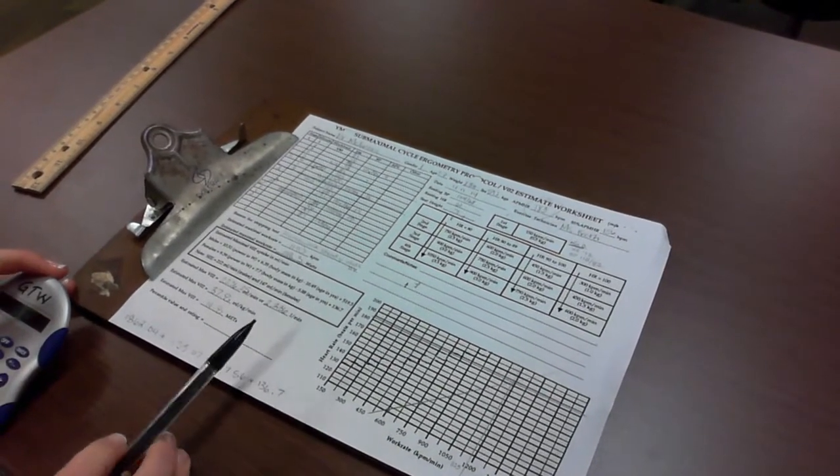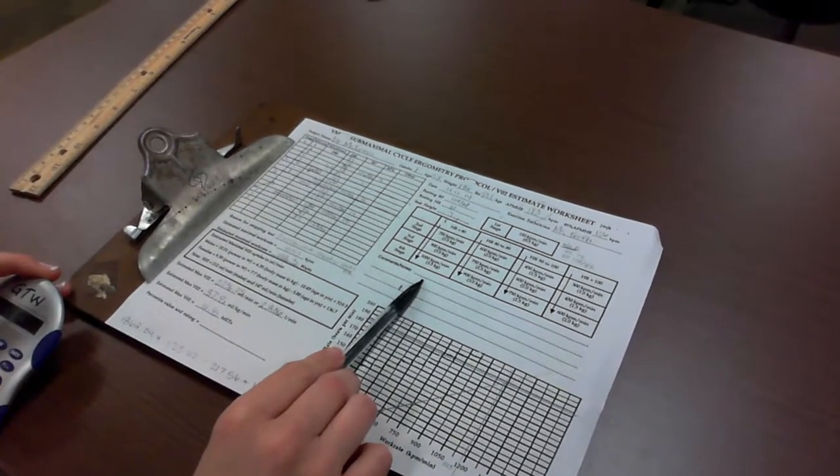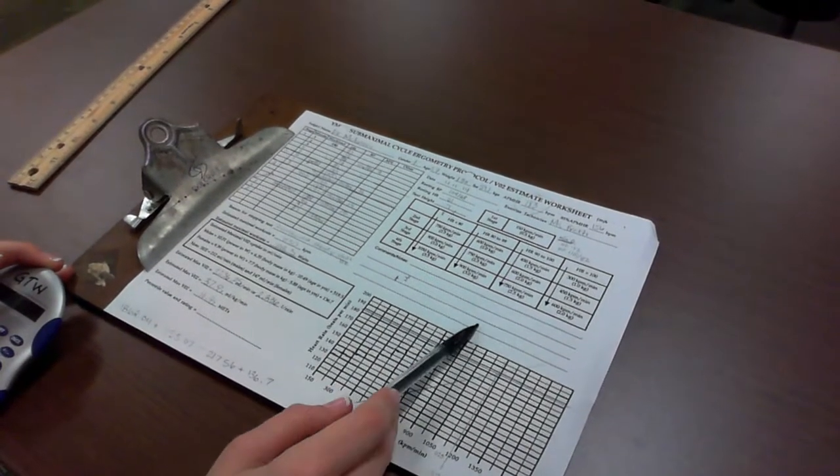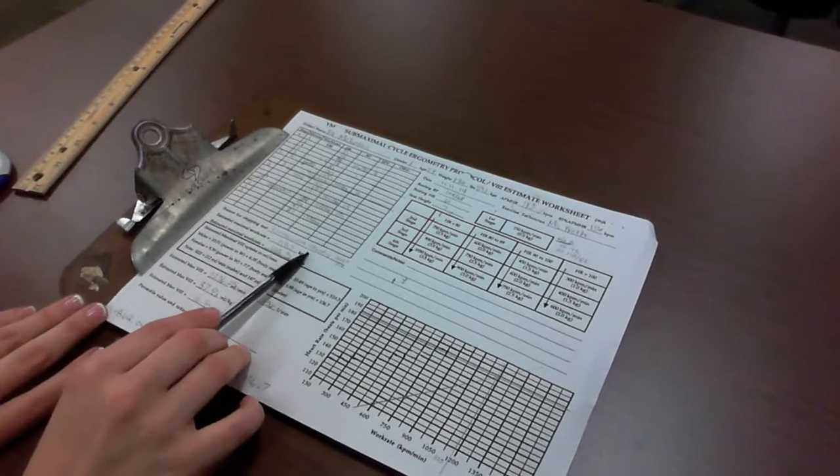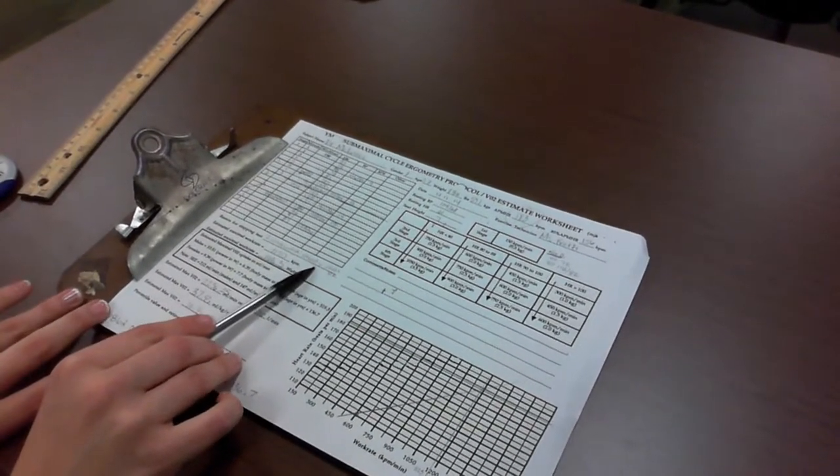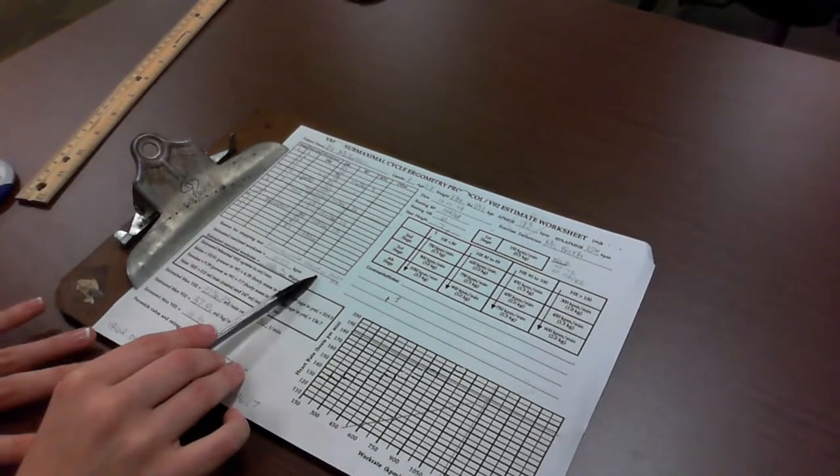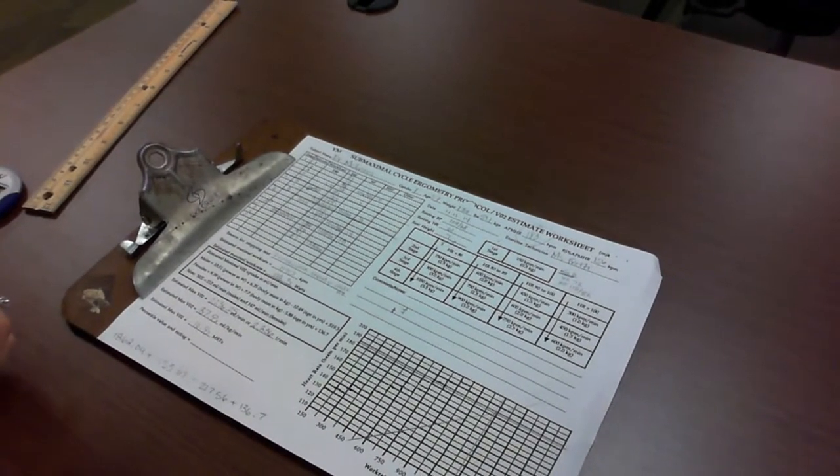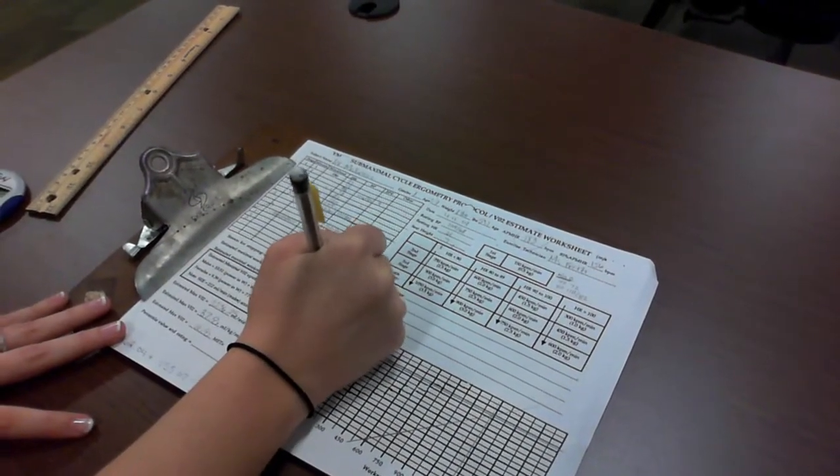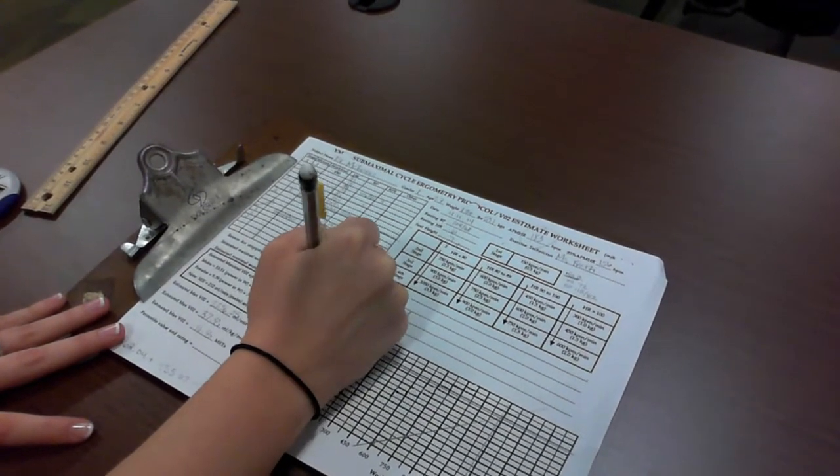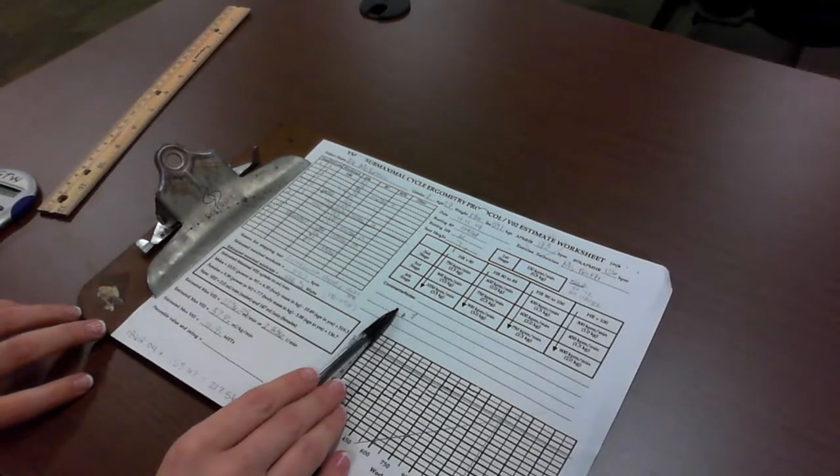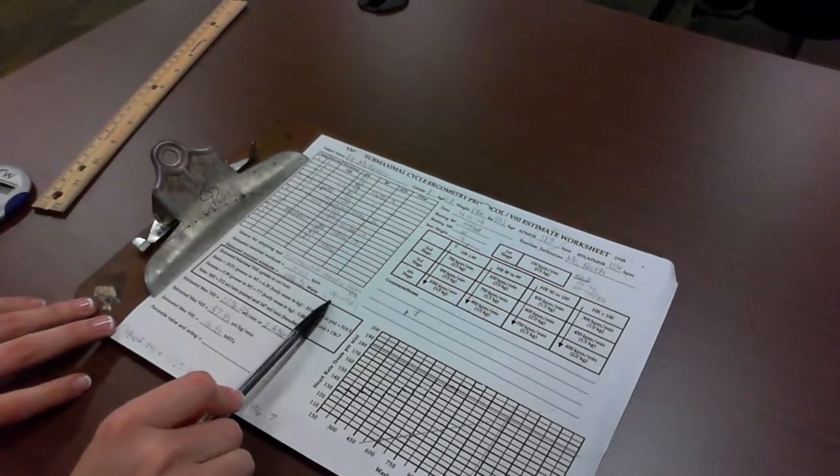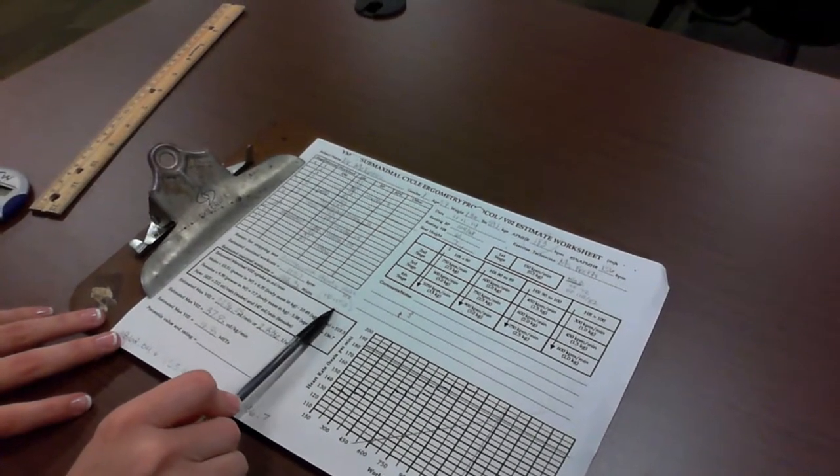We also want to comment about why we terminated the test and why this submaximal test is a valid test or why it can relate to a max VO2 test. Jordan wrote a shorthand here that the test termination criteria was two consecutive steady-state heart rate stages within beats of 110 and 150. The reason this is a valid submaximal test is because we stayed within this heart rate of 110 and 150 where the linear relationship of heart rate and work rate exists.